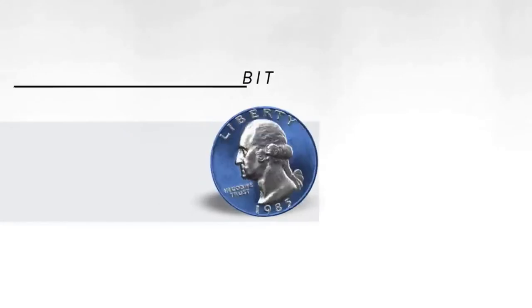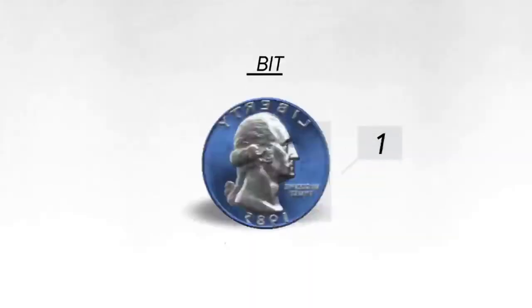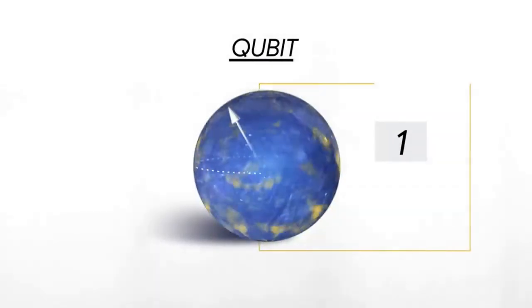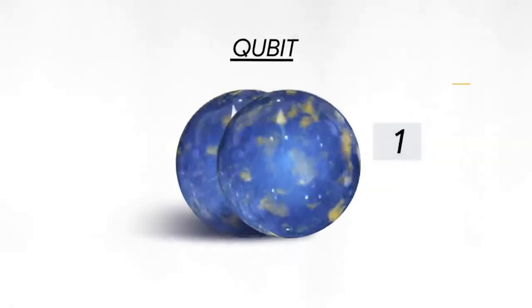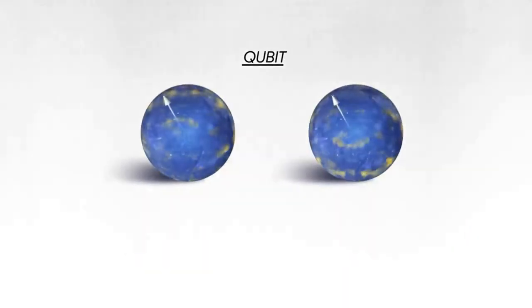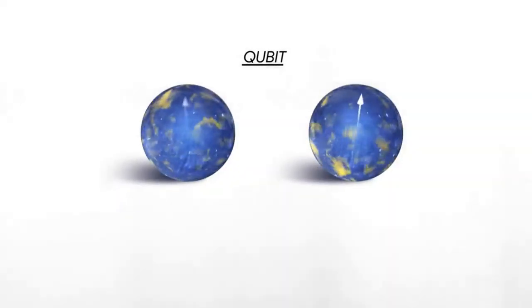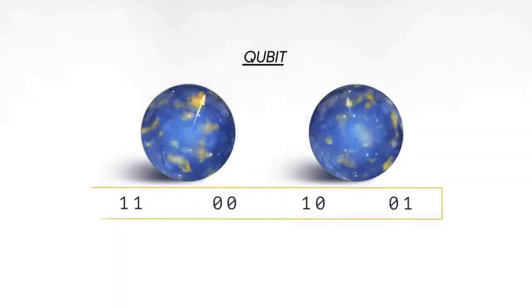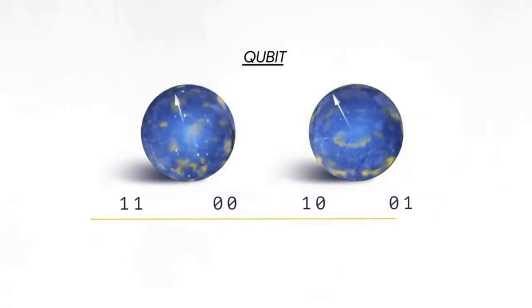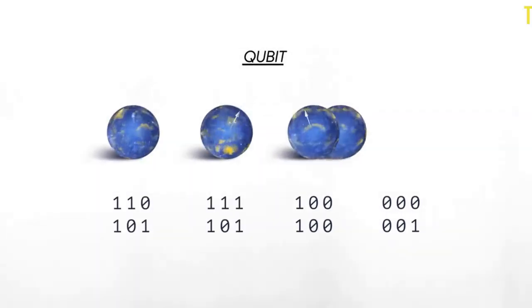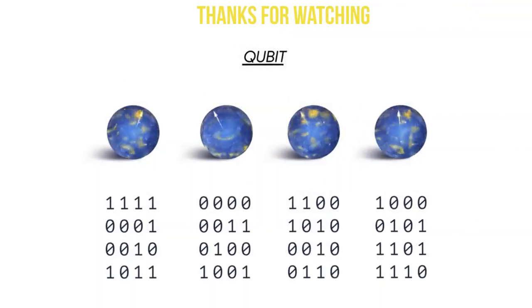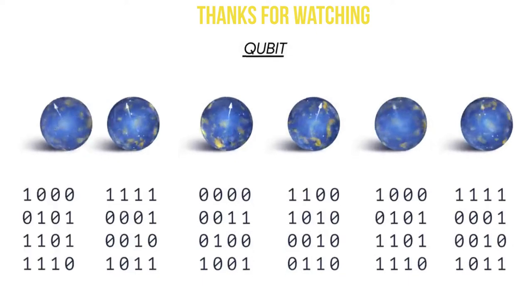The classical bit stores information as a zero or one. A quantum bit can be both zero and one at the same time. If you have two quantum bits, there are four possible states that you can put in superposition. With three qubits it's eight, four qubits it's 16. It grows exponentially.